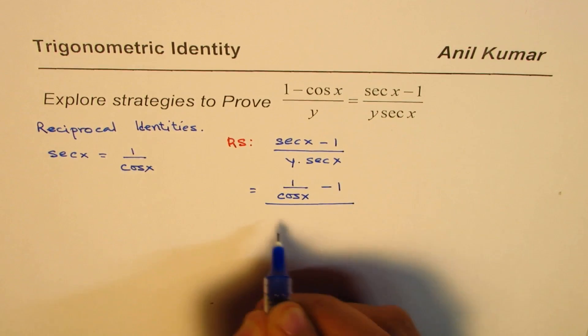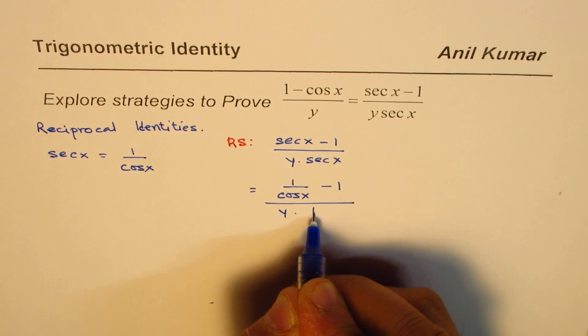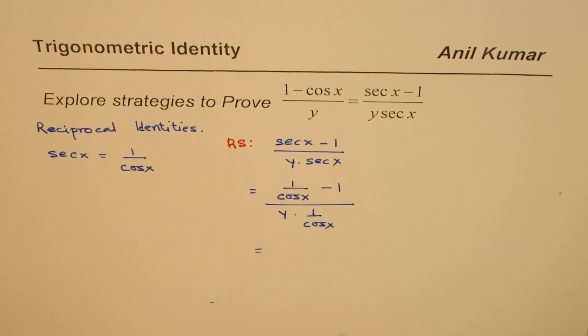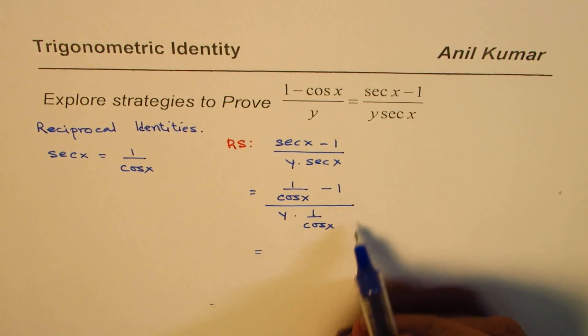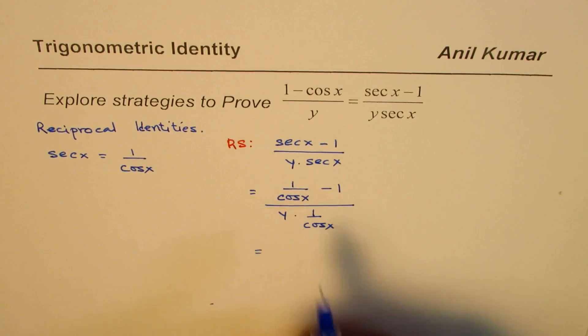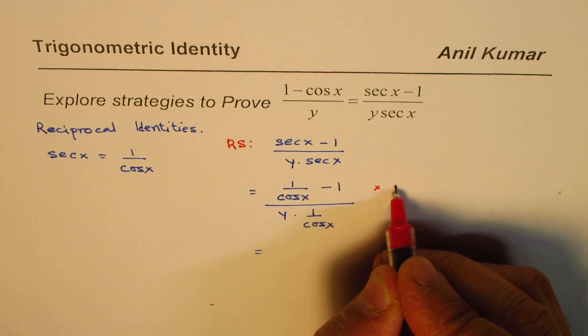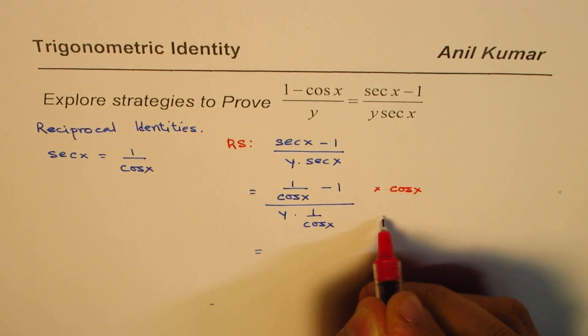Now at this stage, we can multiply both numerator and denominator by cos x. We'll multiply both numerator and denominator by cos x—that is to say, multiply by cos x/cos x, which is as good as multiplying by 1.